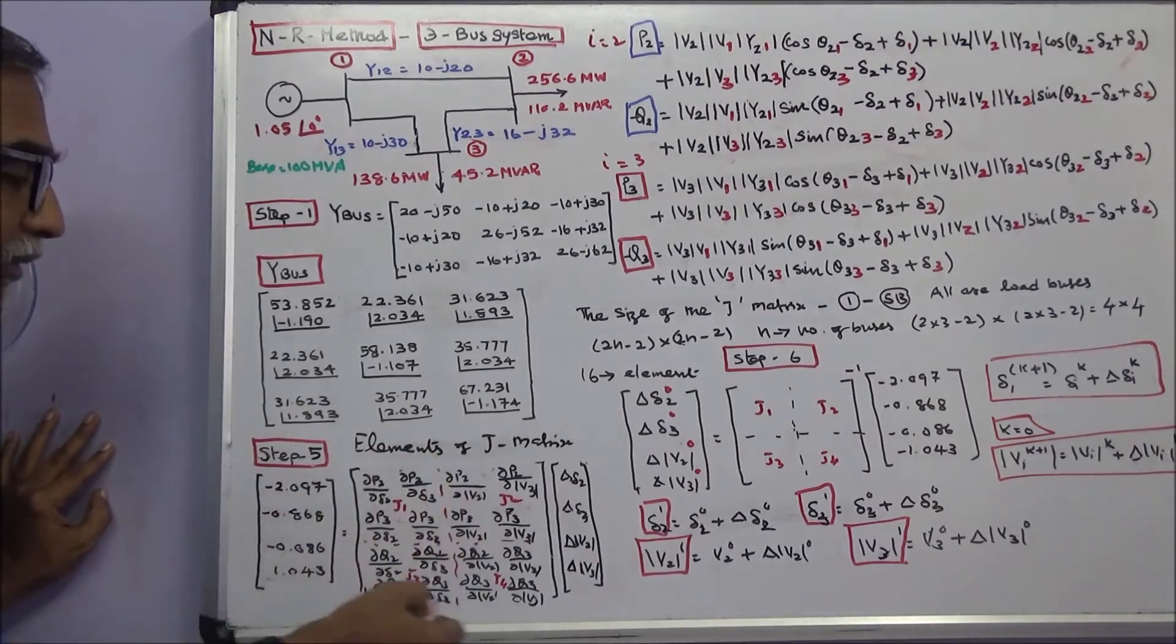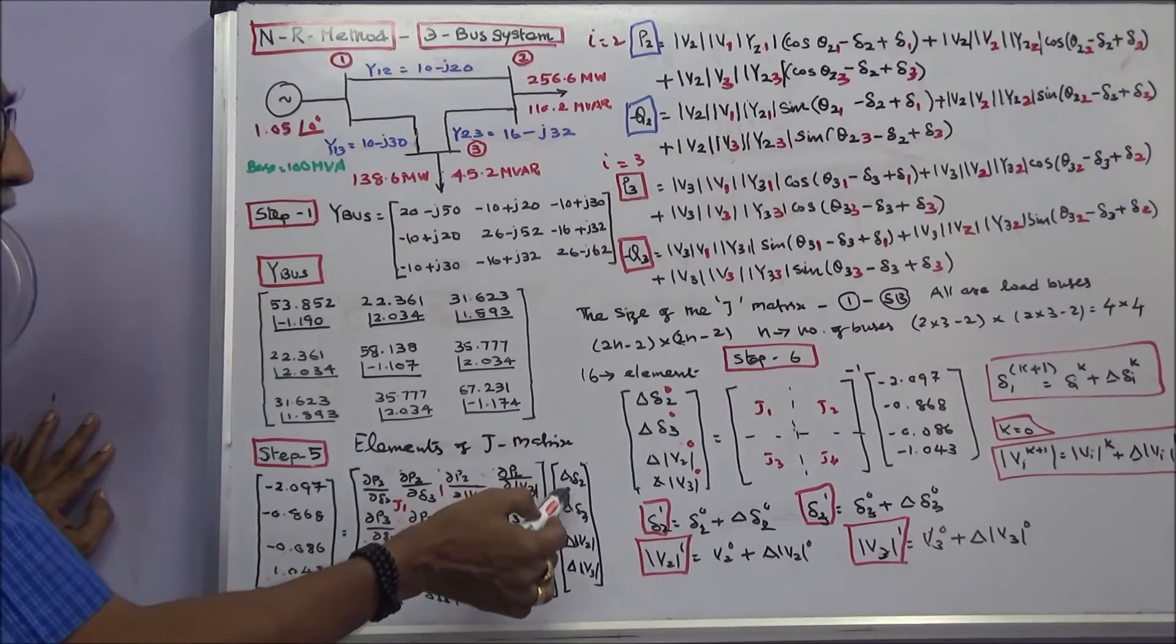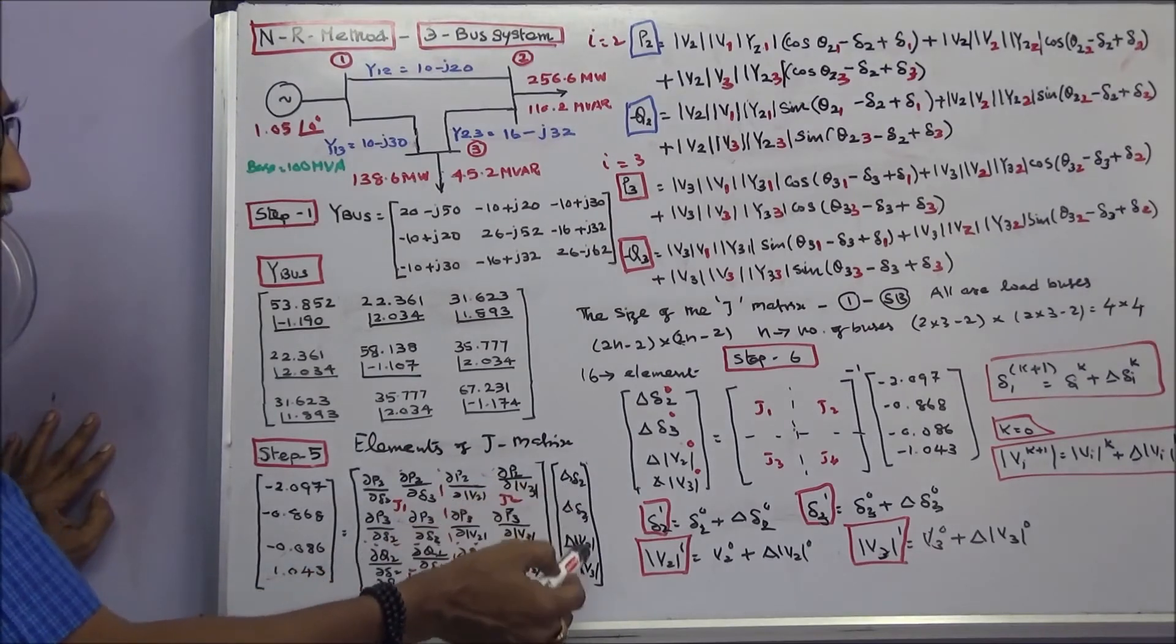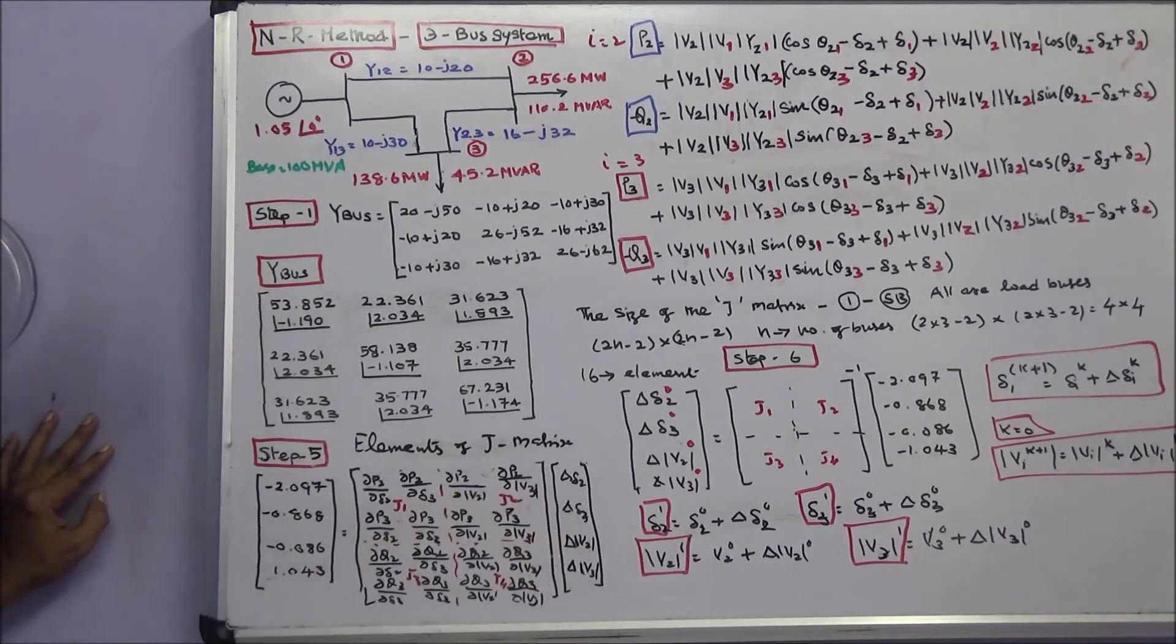Once you take inverse of the Jacobian matrix, you can calculate the change in delta 2, change in delta 3, change in V2, change in V3. That is the sixth step.